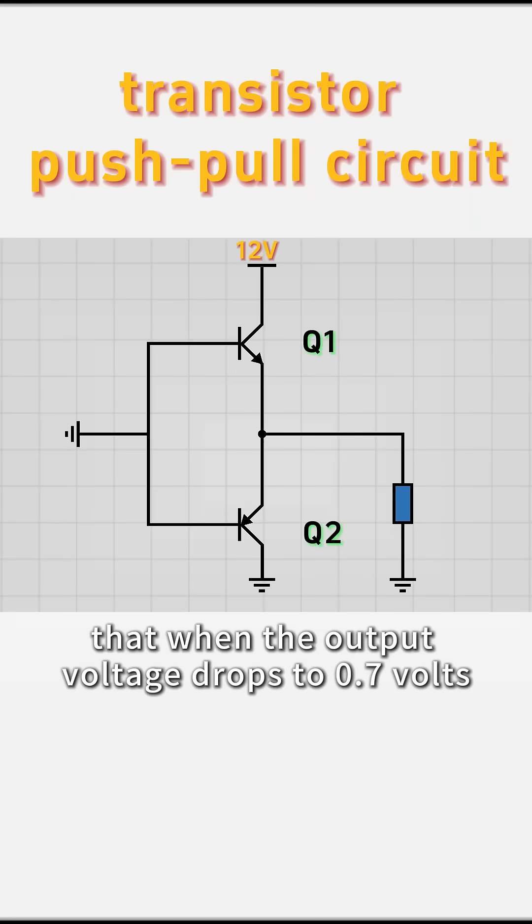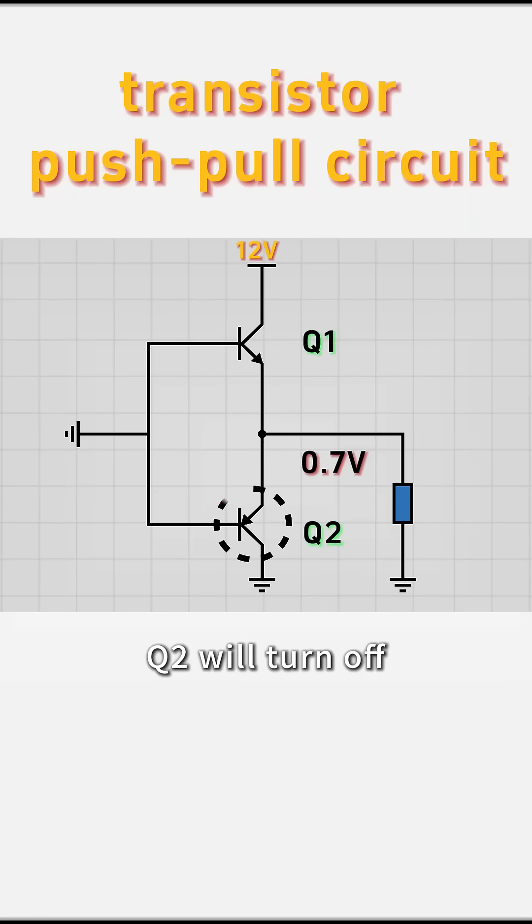It is important to note that when the output voltage drops to 0.7 volts, Q2 will turn off. Ultimately, the voltage will be 0 volts.